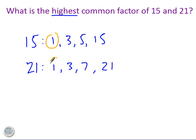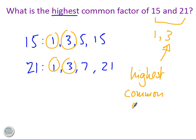And here are the common factors, 1 and 3. Then you look for which one is the highest out of those common factors. So the common factors were 1 and 3. Which one's the highest? Hello? So 3 is the highest common factor of 15 and 21.